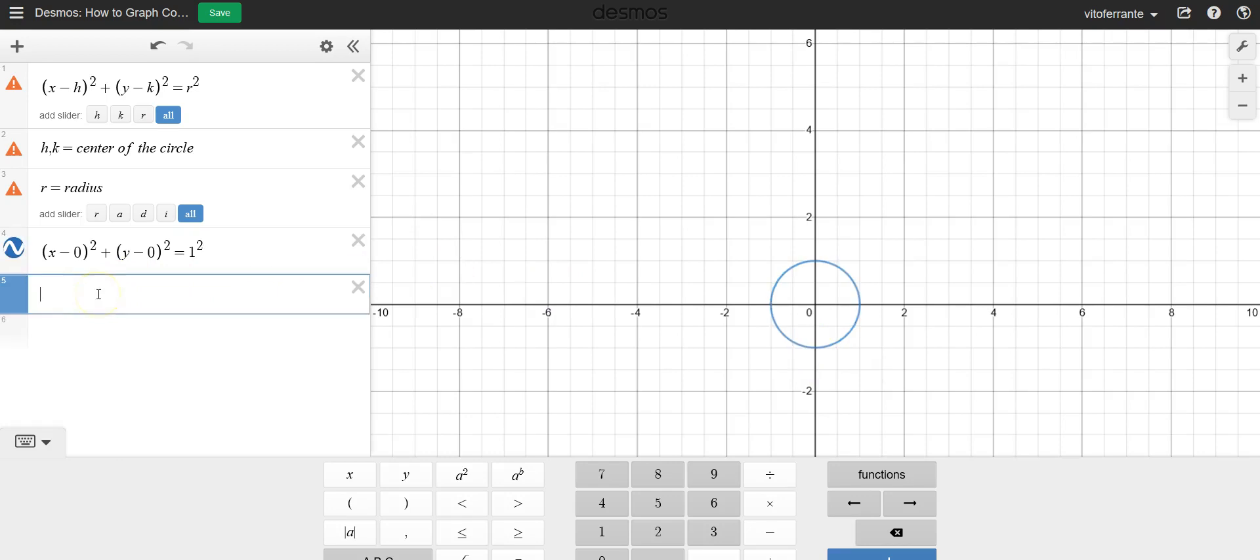Now, we could also write this without the zeros in there and without the square there. And we'll just get x squared plus y squared is equal to 1. And of course, it just did the exact same circle.